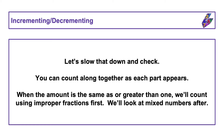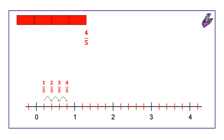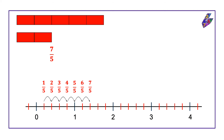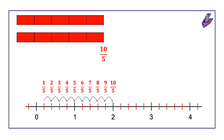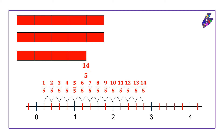Let's slow that down and check. You can count along together as each part appears. When the amount is the same as or greater than one we'll count using improper fractions first. One-fifth, two-fifths, three-fifths, four-fifths, five-fifths, six-fifths, seven-fifths, eight-fifths, nine-fifths, ten-fifths, eleven-fifths, twelve-fifths, thirteen-fifths, fourteen-fifths, fifteen-fifths.